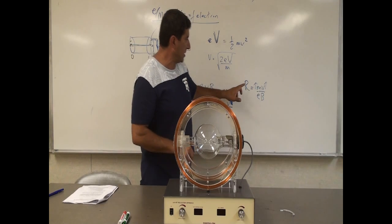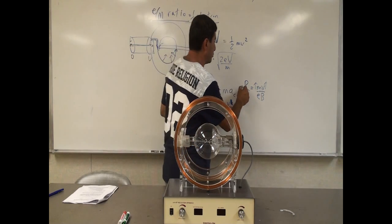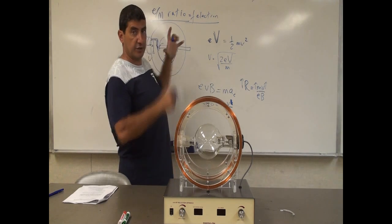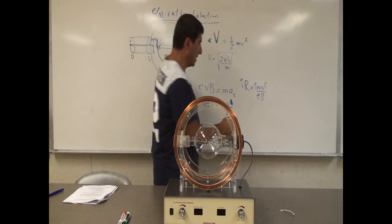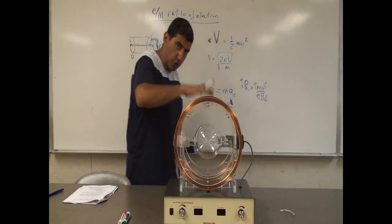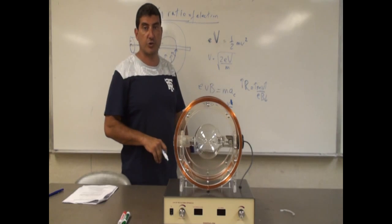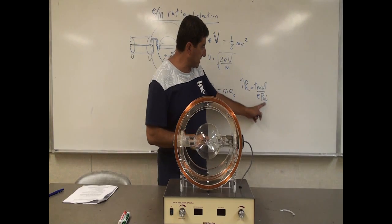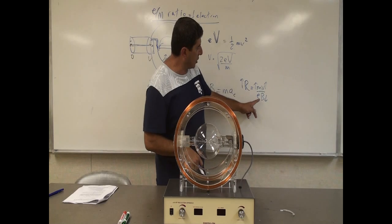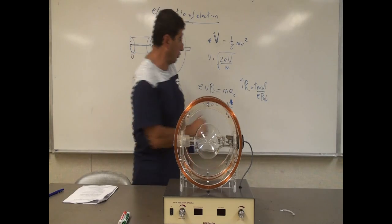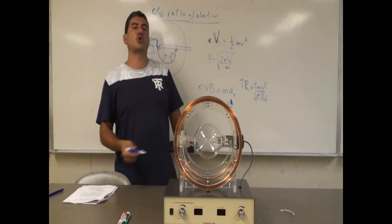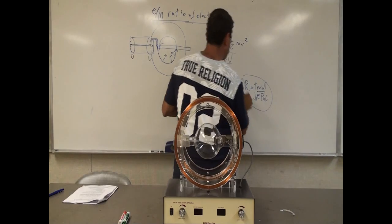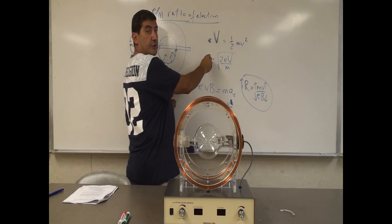The heavier the particle and the faster it's moving, the harder it is to make it turn, so the radius should be large. If the magnetic field created by the Helmholtz coils is weak, that should also make the radius large — it's hard to turn the particles. And if the charge of the electron is low, that should also make the radius of its orbit large.